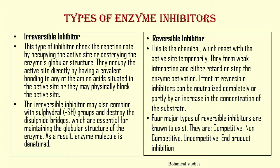There are two types of inhibitors: irreversible inhibitors and reversible inhibitors. Irreversible inhibitors check the reaction rate by occupying the active site or destroying the enzyme's globular structure. They occupy the active site directly by forming a covalent bond with any of the amino acids situated in the active site, or they may physically block the active site. The irreversible inhibitor may also combine with sulfhydryl groups and destroy the disulfide bridges which are essential for maintaining the globular structure of the enzyme, resulting in denaturation of the enzyme molecule.